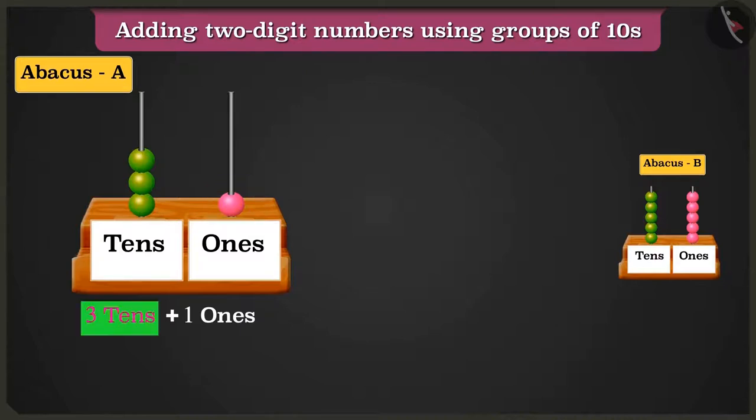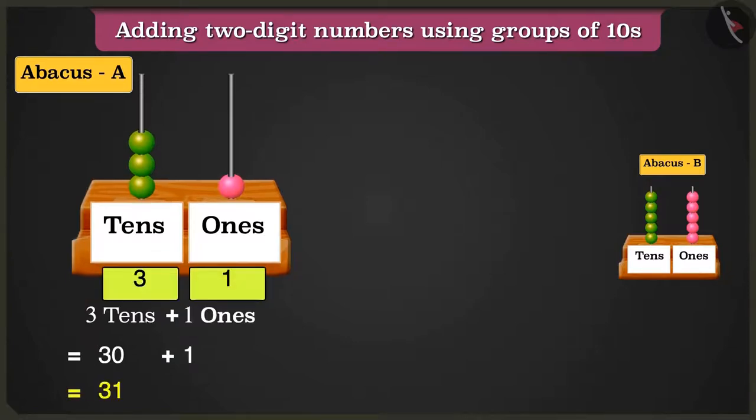So adding 3 tens, that are 30, and 1 one, that is 1, will be equal to 31. Hey, perfect answer, Greeny.